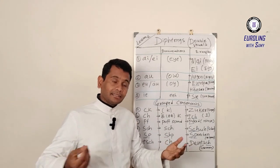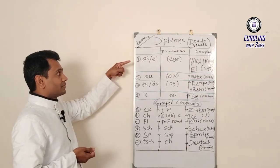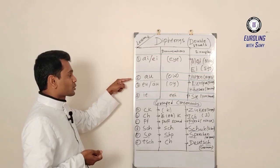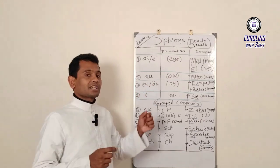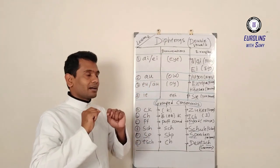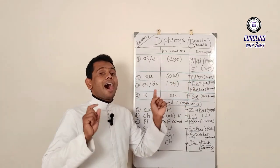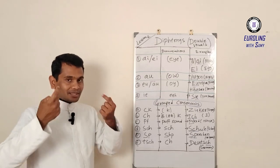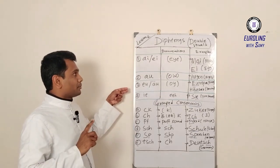The second type of double vowels or diphthongs is A-U. That is pronounced as AU. For example, AUGEN. AUGEN, that means eyes. AUGEN.